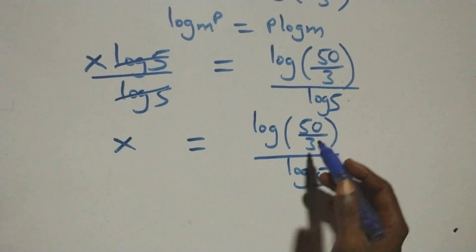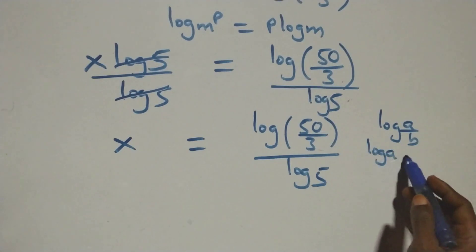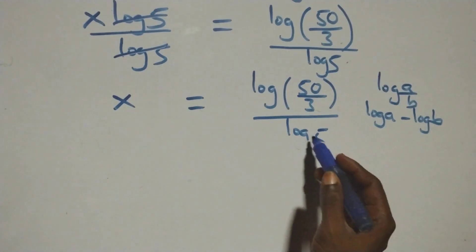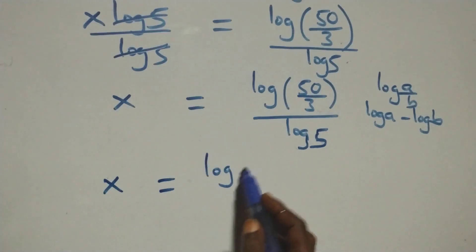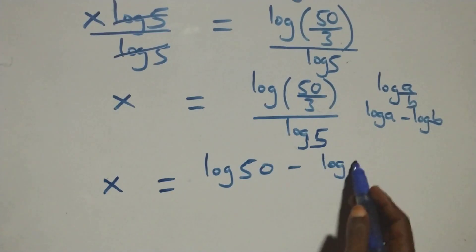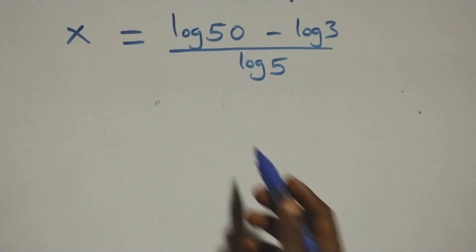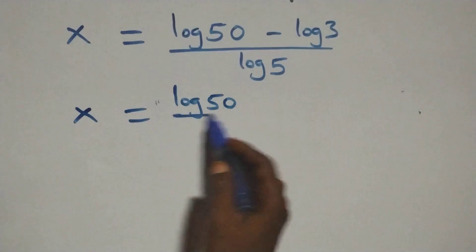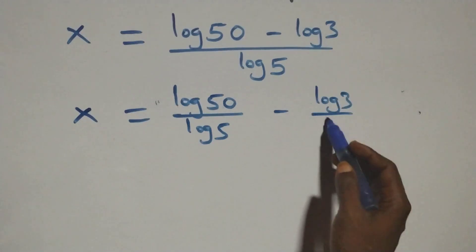This follows the log quotient rule, where log(a/b) is the same as log a minus log b. So x equals log 50 over log 5, then minus log 3 over log 5.